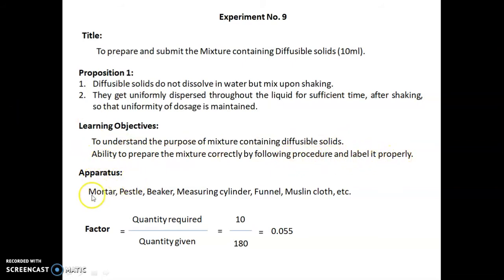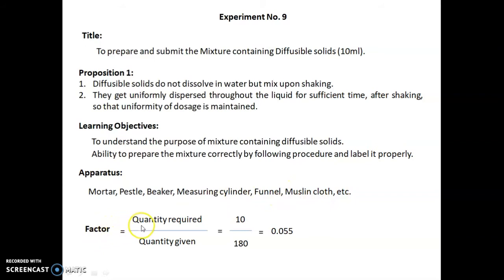Apparatus required: mortar, pestle, beaker, measuring cylinder, funnel, muslin cloth, etc. The factor calculated for this is quantity required divided by quantity given, which equals 10 divided by 180, giving a factor of 0.055.